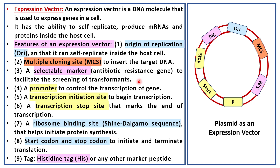So what is an expression vector? An expression vector is a DNA molecule that is used to express genes in a cell. It has the ability to self-replicate, just like the cloning vector, and it also produces mRNAs and proteins inside the host cell.